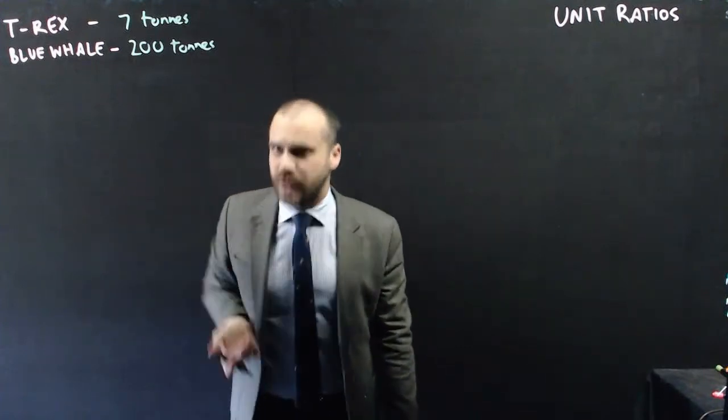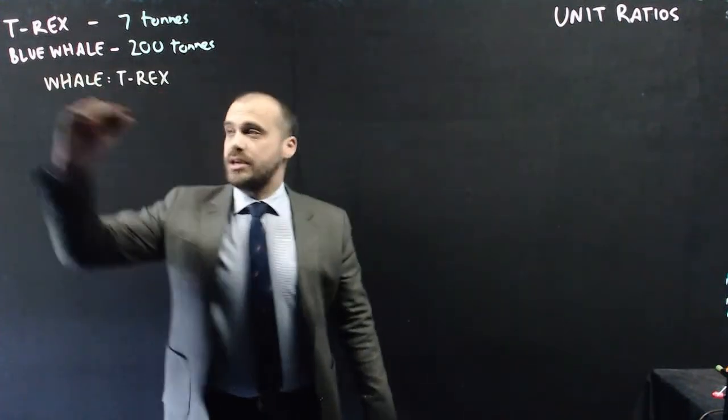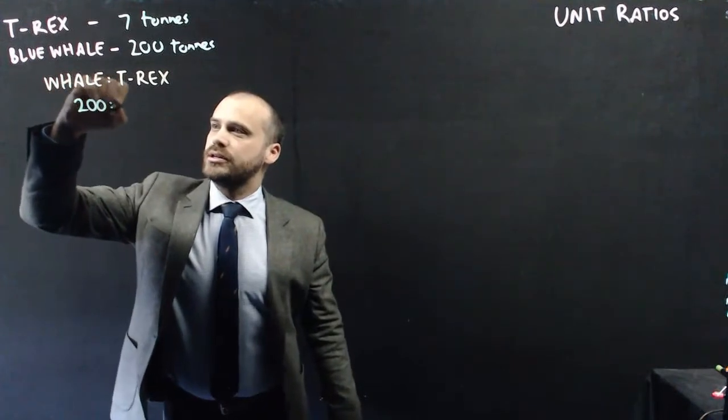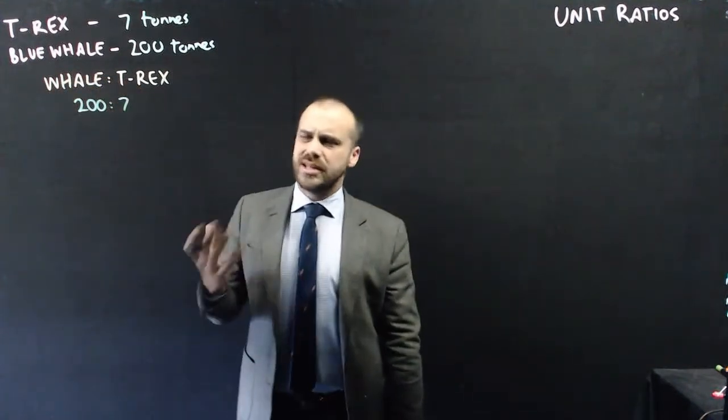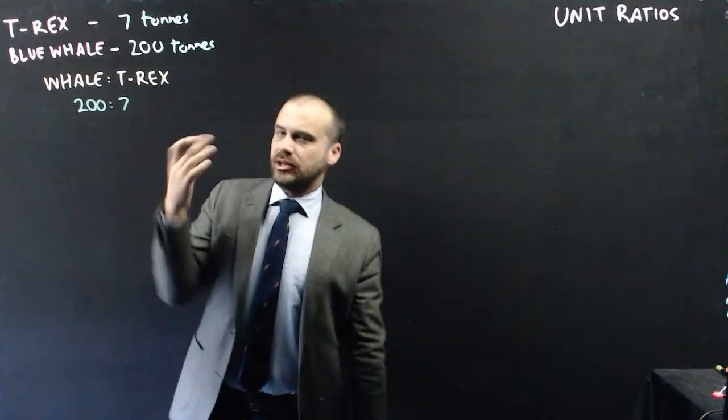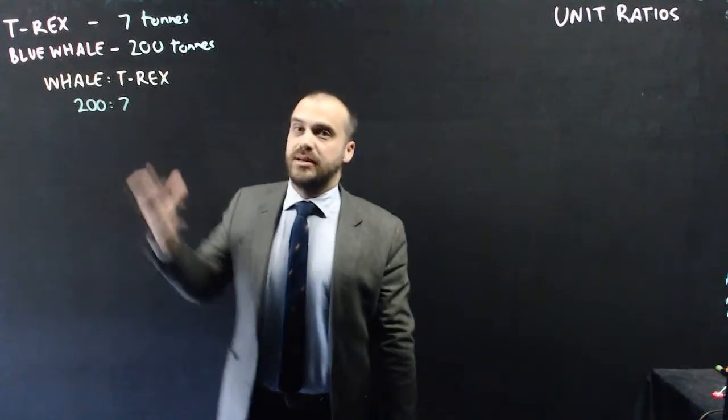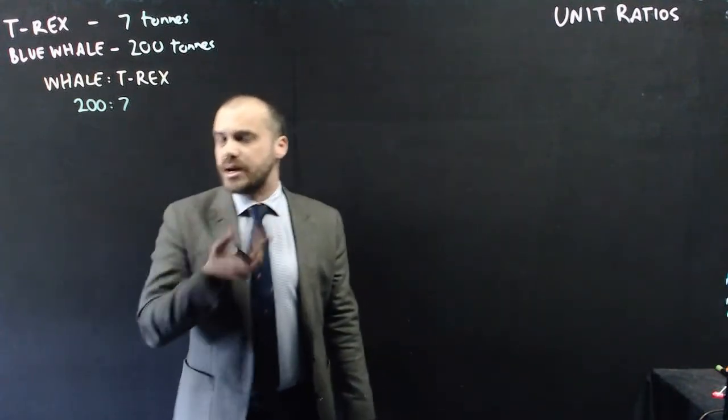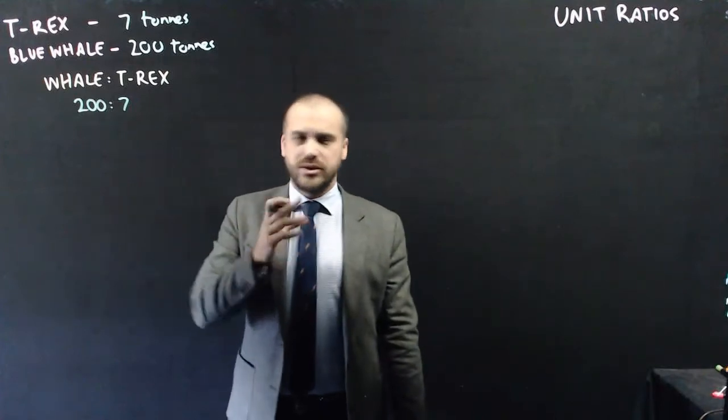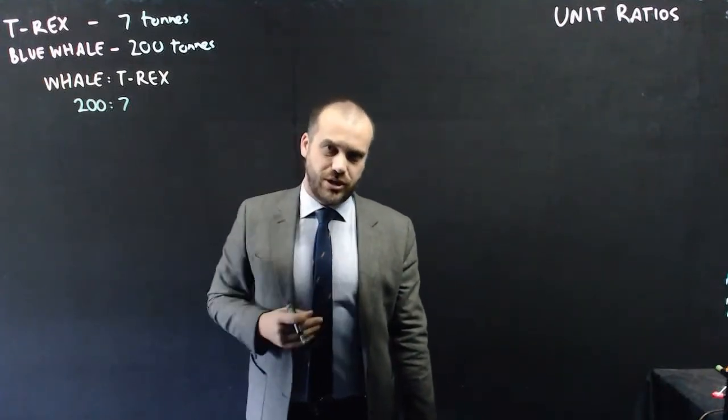So let's compare the two using a ratio. The ratio of whale to T-Rex is 200 to 7. Now what does that look like? Yes, it's clear that the whale is much bigger than the T-Rex, but how much bigger? For that, we can use something called a unit ratio.